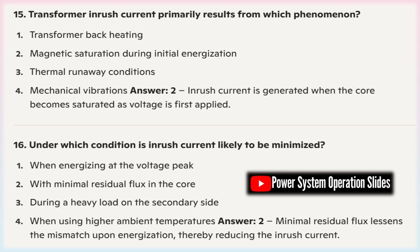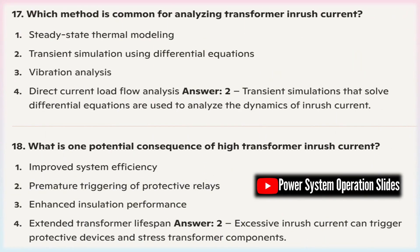Core design: Transformer cores can be designed with low remanence and low saturation characteristics. Core materials with lower saturation levels can help reduce the magnitude of inrush current and minimize core saturation effects during startup.